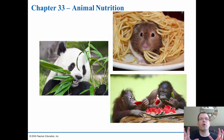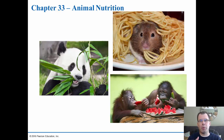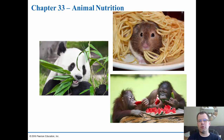Most animals are one of three types: carnivores, which eat only meat; herbivores, which eat plants; or omnivores, which eat both. You can often look at an animal's teeth to determine what it eats. It's all about getting nutrients, and we'll take a look at what nutrients are important as we go on today.